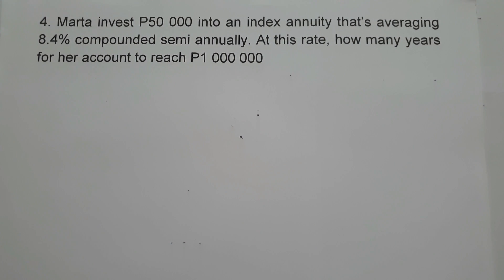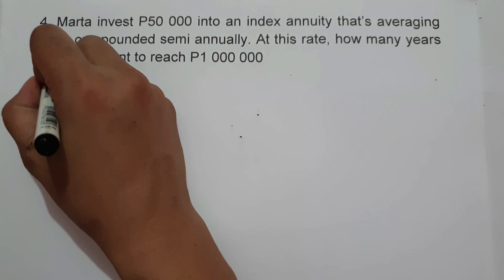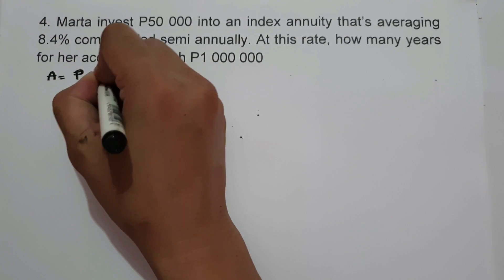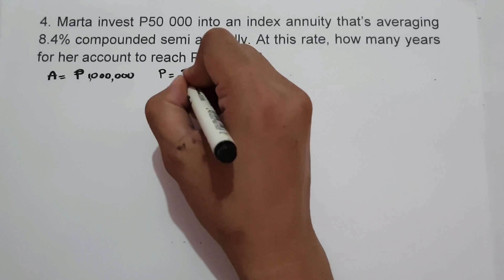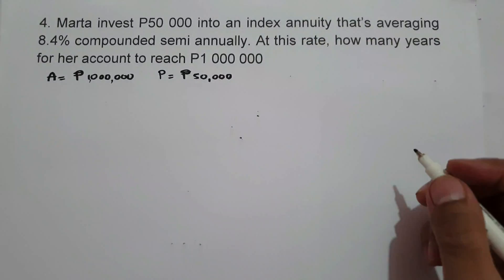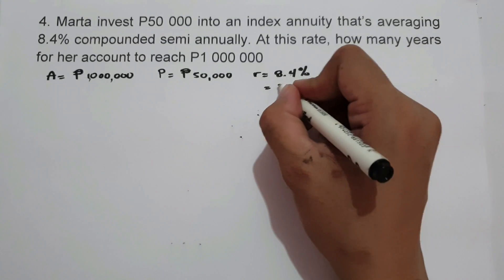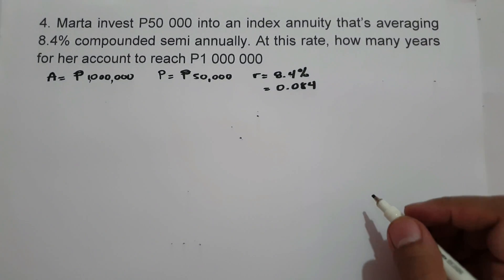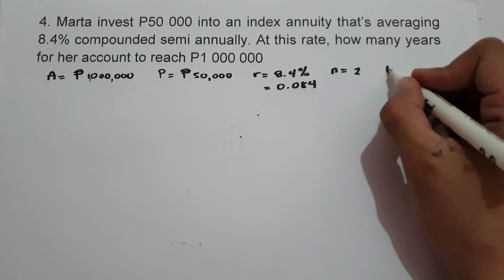For example number 4, Marta invests 50,000 pesos in an index annuity averaging 8.4% compounded semi-annually. At this rate, how many years will it take for her account to reach 1,000,000 pesos? The given are: future value is 1,000,000, principal is 50,000, rate is 8.4% or 0.084, N is 2 for semi-annually, and we are looking for time T.